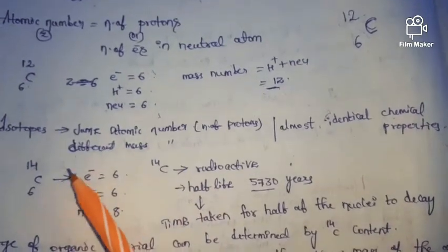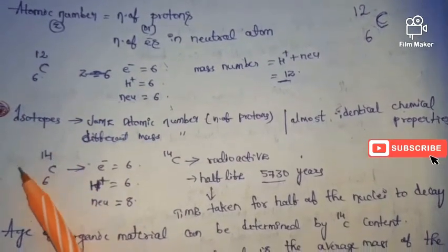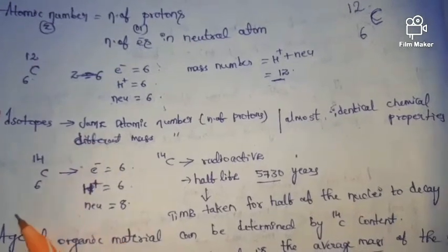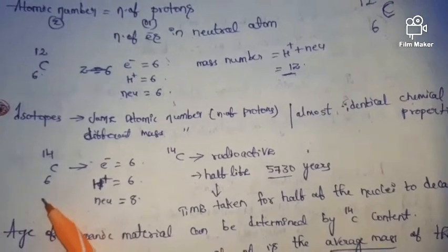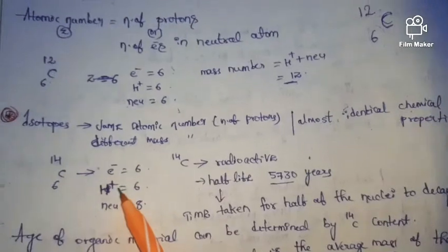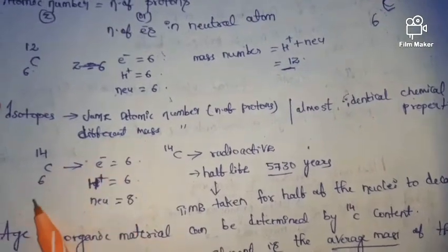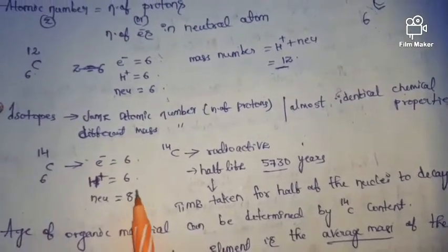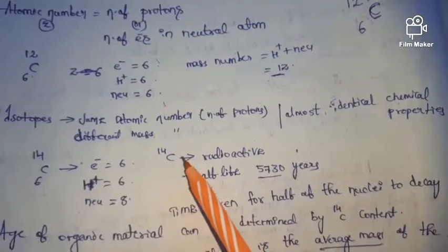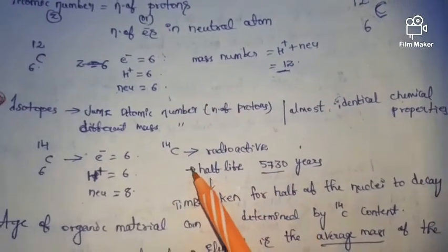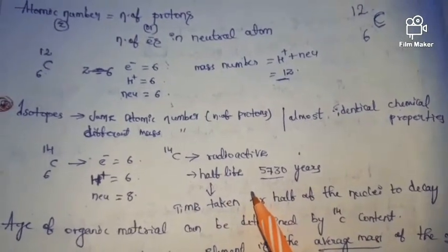Already we saw this. C-14 is an isotope of carbon. This is also a neutral atom. Atomic number equals number of electrons equals number of protons, so electrons are 6, protons are 6. For neutrons: mass number minus atomic number = 14 minus 6 = 8. We know C-14 is radioactive.